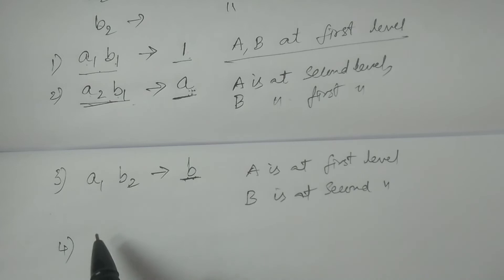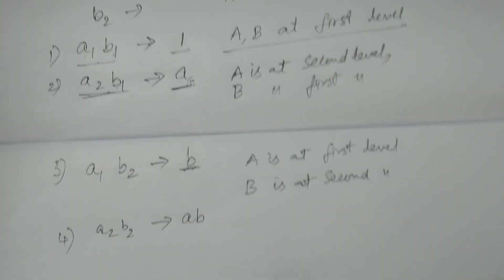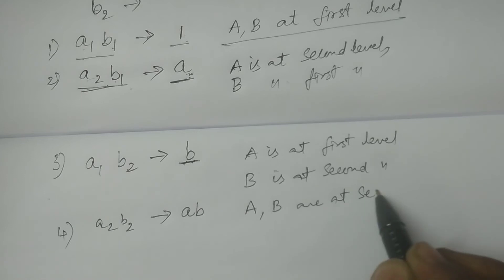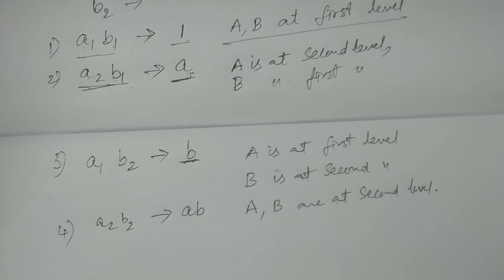The fourth treatment combination is A2, B2 — both A and B are at second level. Therefore we write both A and B, giving us 'ab'. This is how the four treatment combinations — 1, a, b, ab — are represented for two factors A and B at two different levels.